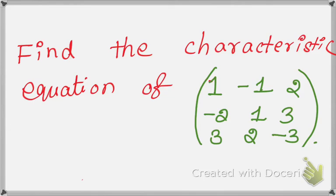Dear students, next I am going to talk about a problem with the characteristic equation. Our question is: find the characteristic equation of the matrix with entries 1, minus 1, 2, minus 2, 1, 3, 3, 2, minus 3.